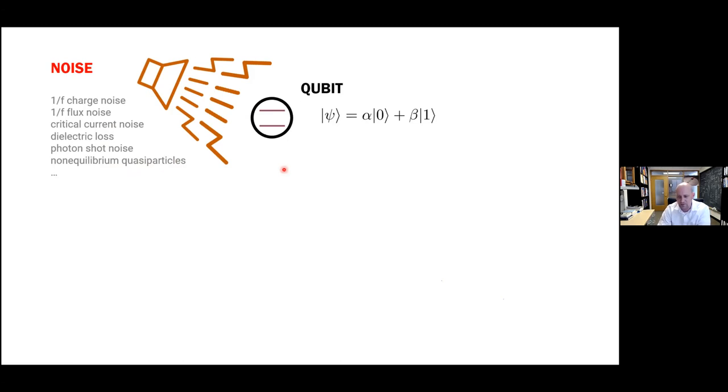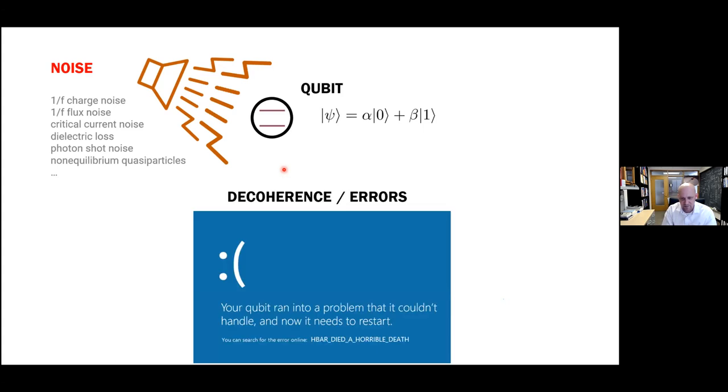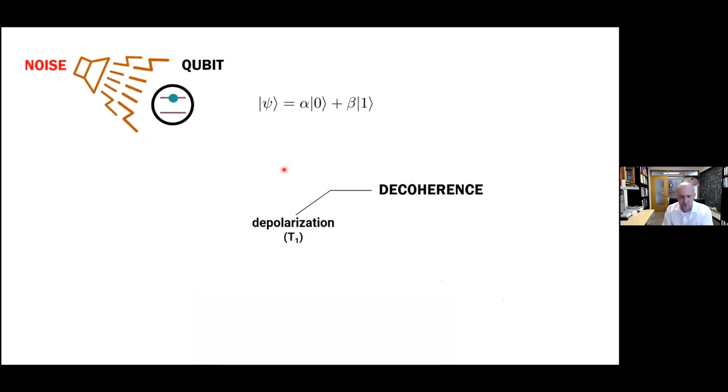So this loss of quantumness or decoherence limits gate fidelities. And it ultimately leads to errors in the execution of a quantum algorithm. So without some strategy for mitigating those errors, a future quantum computer would just keep crashing with a blue screen. Maybe if the operating system is like Windows, then the blue screen might look like this, right? Your qubit ran into a problem that it couldn't handle and now it needs to restart. And so we need to try and rescue h-bar from this horrible death. And we'll do that in a moment. But I'll quickly remind us of the two primary modes of decoherence that we need to consider in this context.